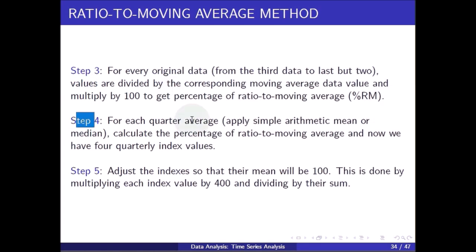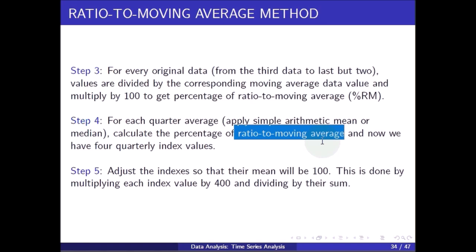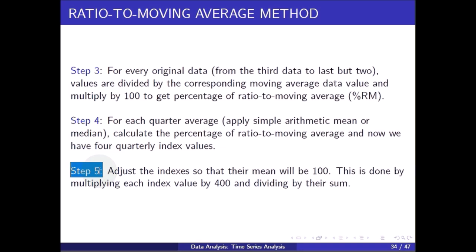Step 4: for each quarter, calculate the average percentage ratio to moving average — now we have four quarterly index values. Step 5: adjust the indexes so that their mean will be 100. This is done by multiplying each index value by 400 and dividing by their sum.